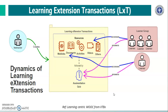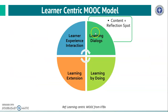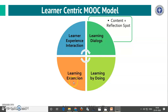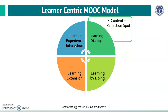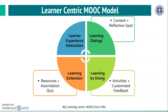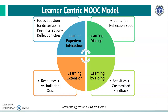Thus online learning has four major components: LED — Learning Dialogue, LBD — Learning by Doing, LXT — Learning Extension Trajectories, and LXI — Learner Experience Interaction. In LED, content includes videos and other materials along with reflection spots. LBD has activities plus customized feedback. LXT has resources plus assimilation quiz. LXI has a focused discussion question, peer interaction, and reflection quiz. We should include all four components in online learning to make it learner-centric.